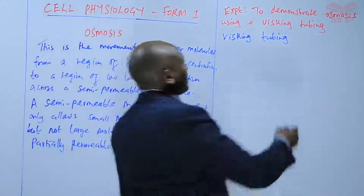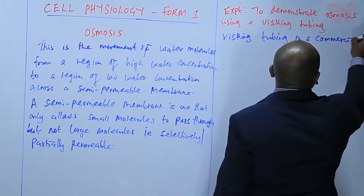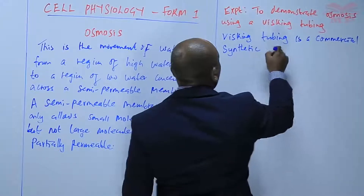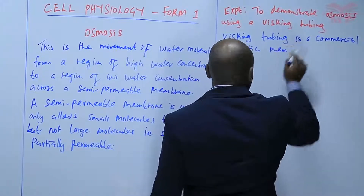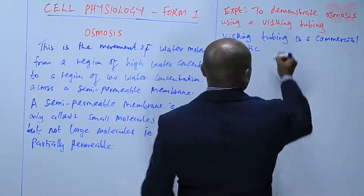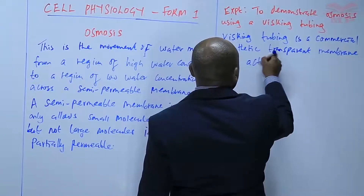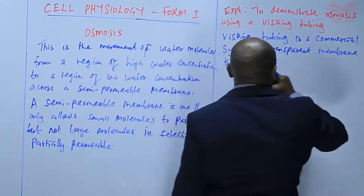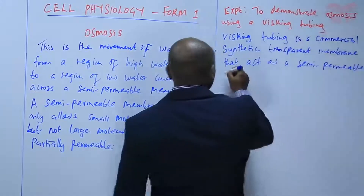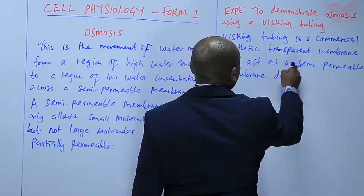The visking tubing is a commercial, transparent, synthetic membrane that acts as a semi-permeable membrane during experiments.